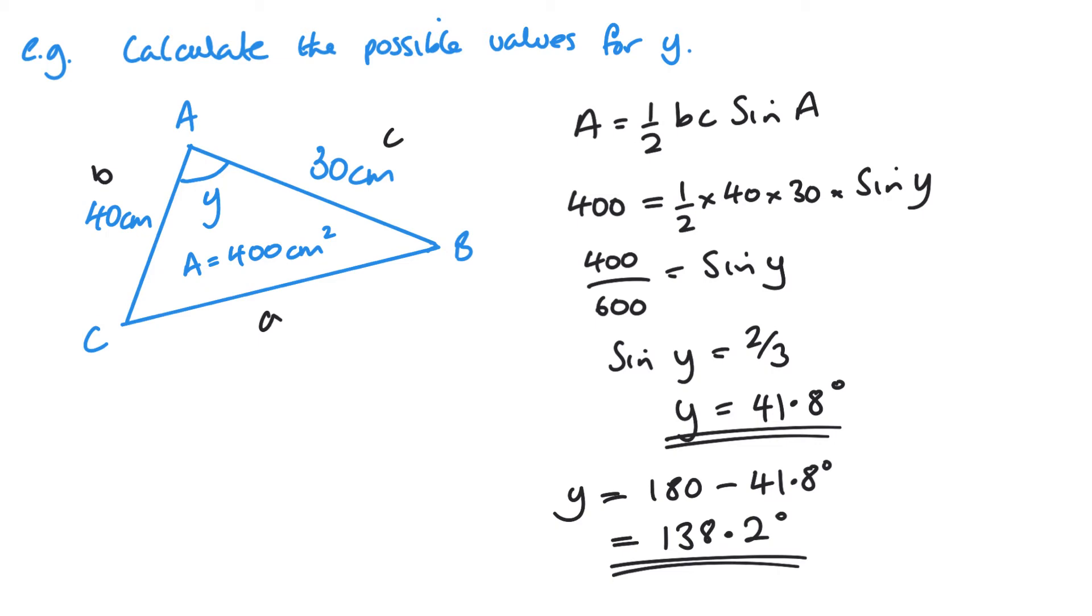So when working out an angle using one of these rules, the sine rule from the last video, or when looking at areas when I've got to use sine as well, what you need to make sure you're careful of is that if the question does not state whether it's acute or obtuse, because it will be one or the other, then you need to make sure you find both.